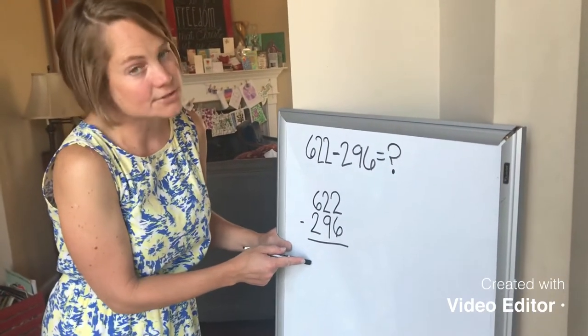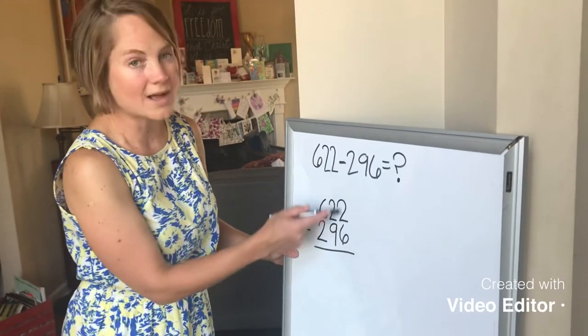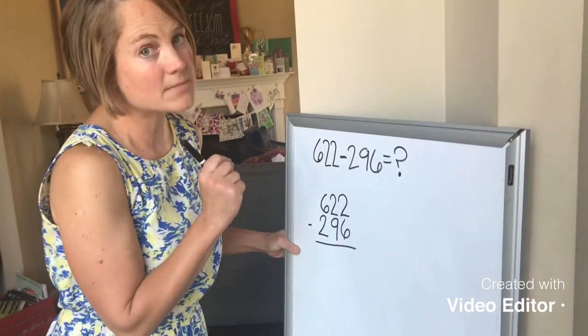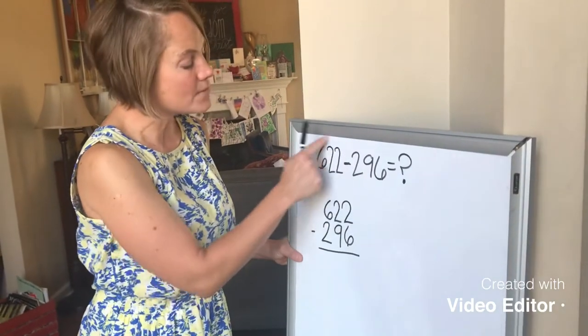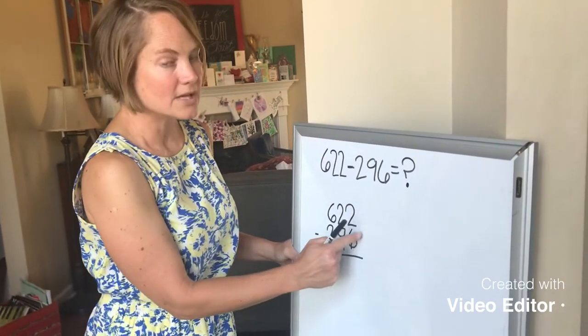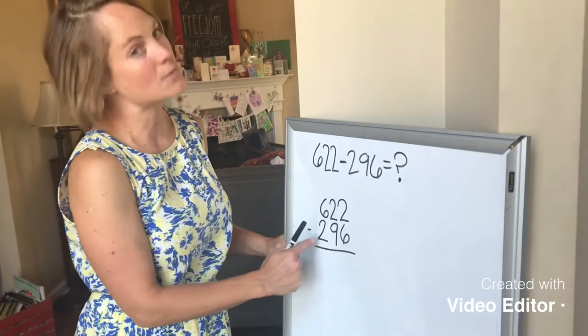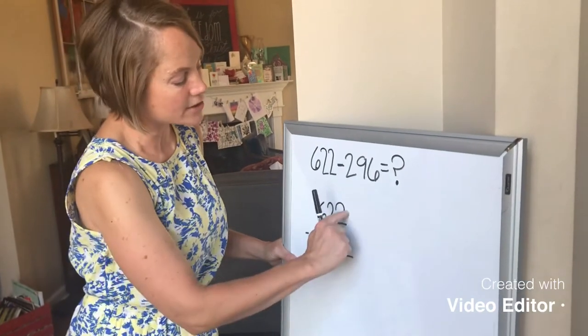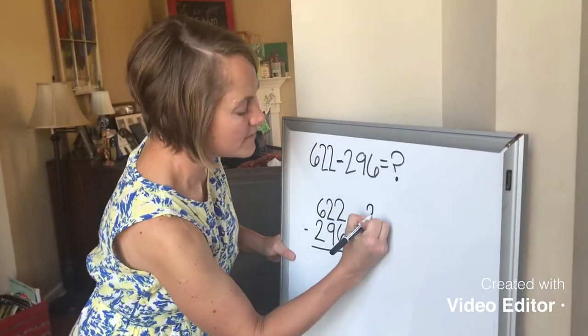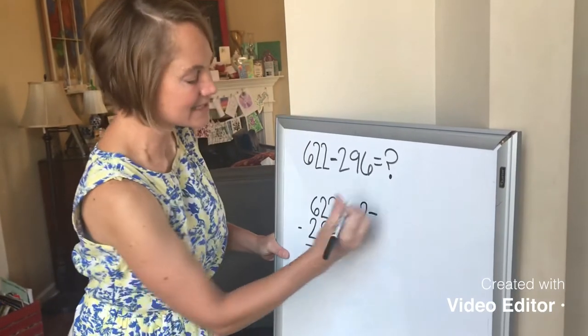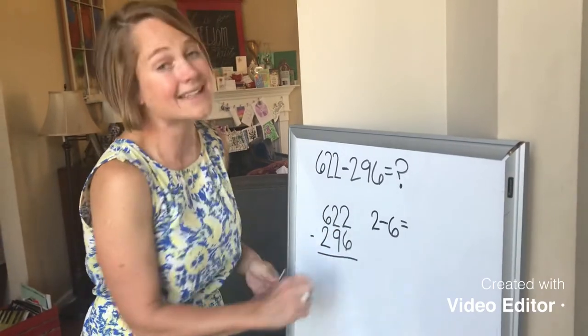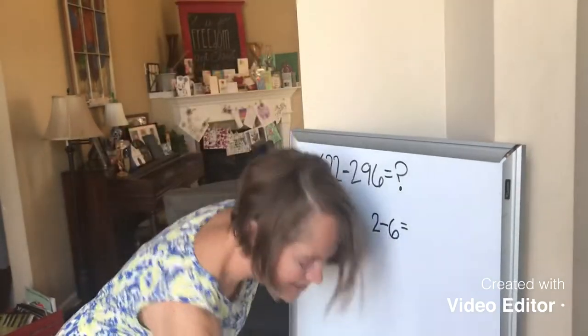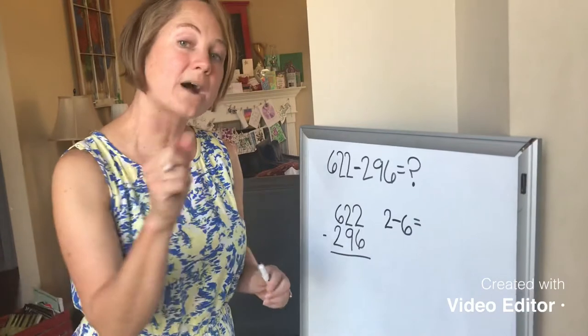Now whenever you use the standard algorithm, you always begin with the 1s. And something else to keep in mind about subtraction is that you have to begin with the minuend, with this big number, and take away the subtrahend, the smaller number. That means I have to start with the 2 from the minuend, and I have to take away the 6 in the subtrahend. But that is not going to work. If I have 2 cookies, I cannot give you 6 cookies. So with the standard algorithm, we borrow.